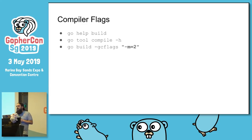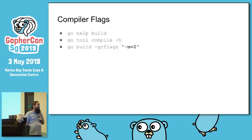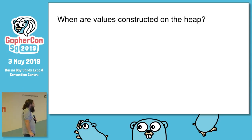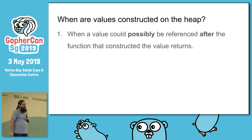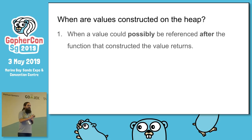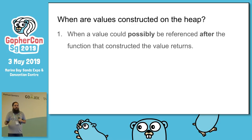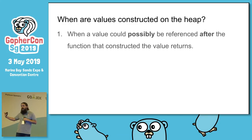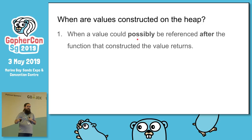I normally run with -m=2 for more verbose output. When are values constructed on the heap? There are really only three times. First and most common: when a value could possibly be referenced after the function that constructed it returns. Variables don't just go on the stack — they go in the stack frame for a particular function. If that function has already returned but the variable will still be used, it has to go to the heap. Go takes a very safe approach: if it is at all possible that a variable will be referenced after the creating function returns, it goes to the heap.